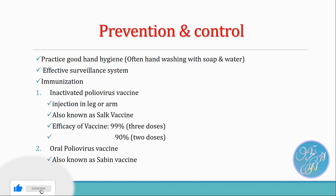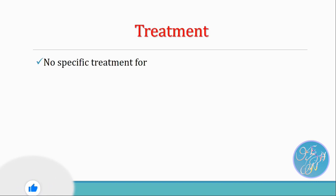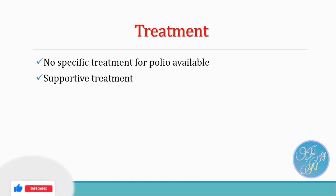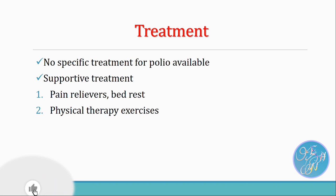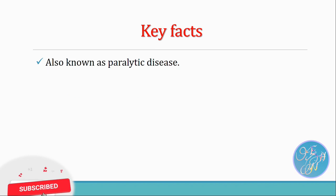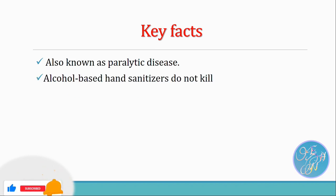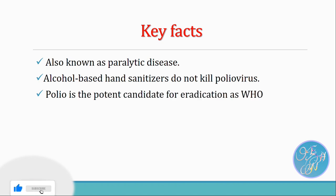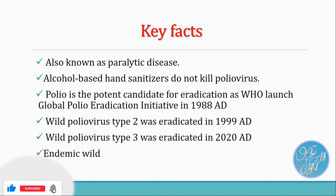We hope you are now clear regarding the epidemiology of polio. Here are a few key facts: as polio is well known for causing paralysis, it is also known as paralytic disease. Alcohol-based hand sanitizers do not kill poliovirus. Regarding the eradication status — in 1988, the World Health Organization launched the Global Polio Eradication Initiative. In 1999, Wild Poliovirus Type 2 was eradicated, and in 2020, Wild Poliovirus Type 3 was eradicated. However, the remaining Wild Poliovirus Type 1 is still prevalent in two countries: Pakistan and Afghanistan.